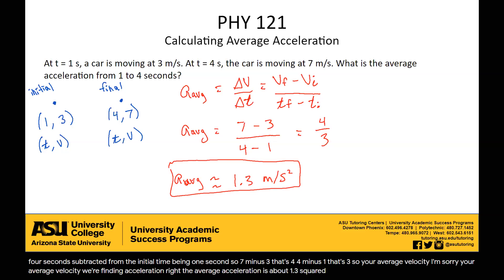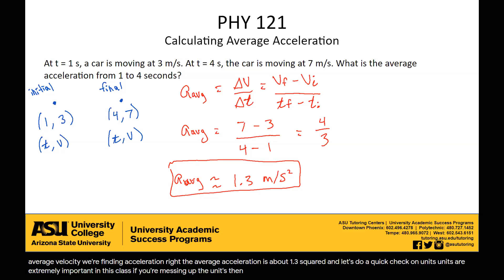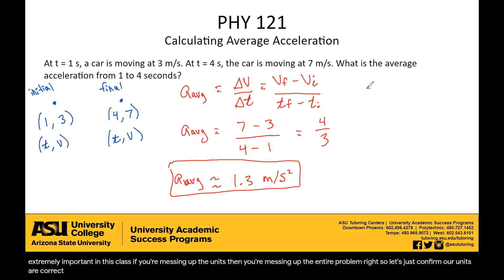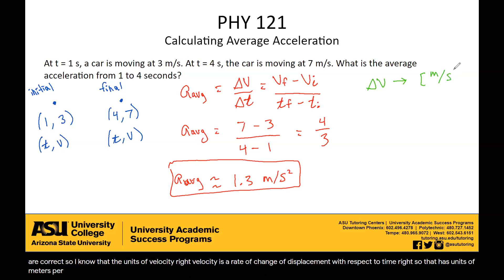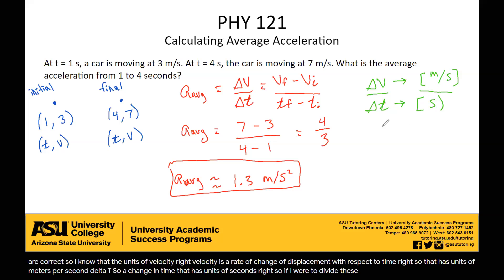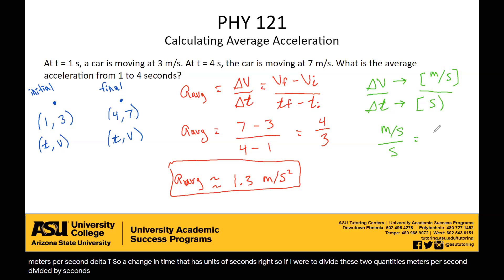Let's do a quick check on units — units are extremely important in this class. If you're messing up the units, you're messing up the entire problem. The units of velocity — since velocity is a rate of change of displacement with respect to time — are meters per second. Delta t, a change in time, has units of seconds. So dividing these two quantities: meters per second divided by seconds gives meters per second times one over second, and thus meters per second squared.